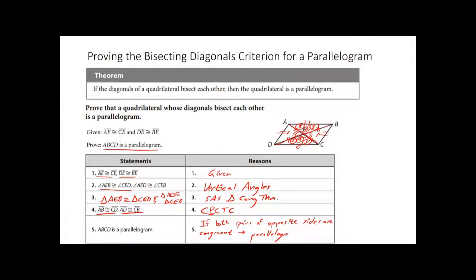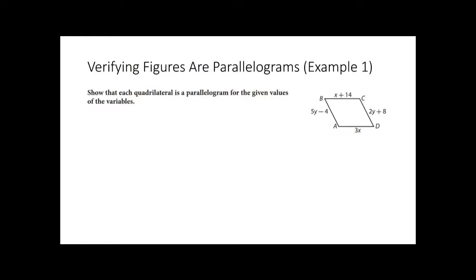Since the opposite sides are the same, we can prove this is a parallelogram. If both pairs of opposite sides of this quadrilateral are congruent, then it's a parallelogram. Now let's start the application. We're verifying figures are parallelograms — given some expressions, we solve for the variable, plug it back in, and confirm the quadrilateral is a parallelogram. We know it's a quadrilateral with four sides; we just have to confirm it's a parallelogram.